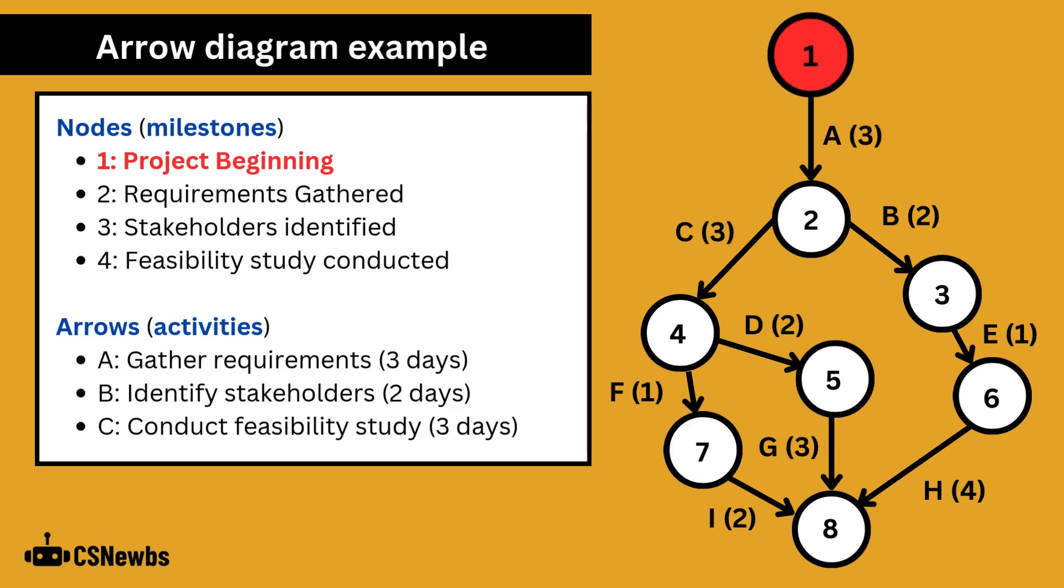Here's an example. Node 1 represents the beginning of a project. The first activity A is to gather requirements and it will take three days, at which point the project will be at milestone 2, which is that the requirements have been gathered.